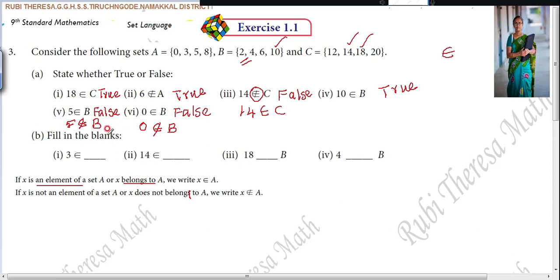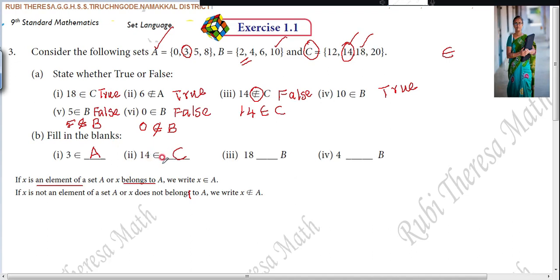Next, fill in the blanks. 3 belongs to which set — A, B, or C? 3 is an element of set A, so you write A. Next: 14 is an element of which set? 14 belongs to set C. Either you can say 'is an element of' or 'belongs to'.